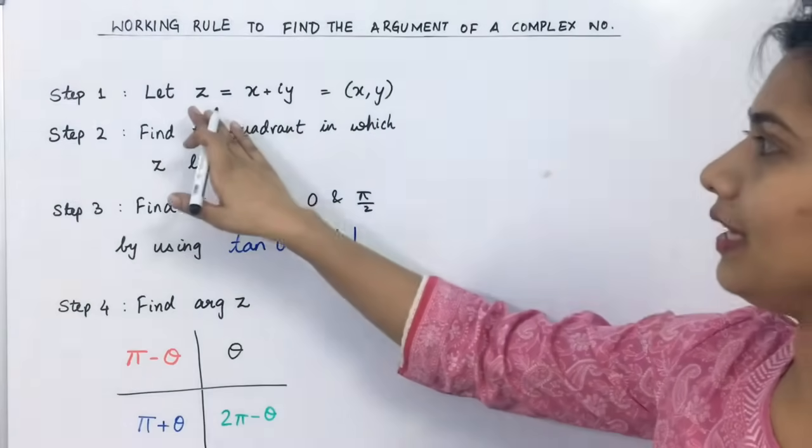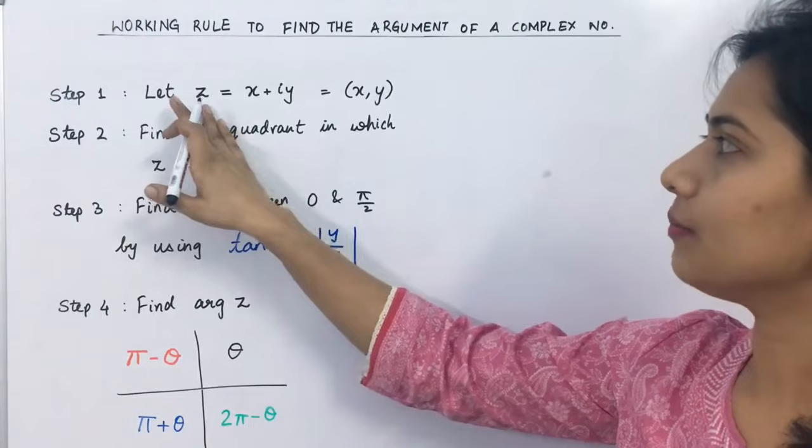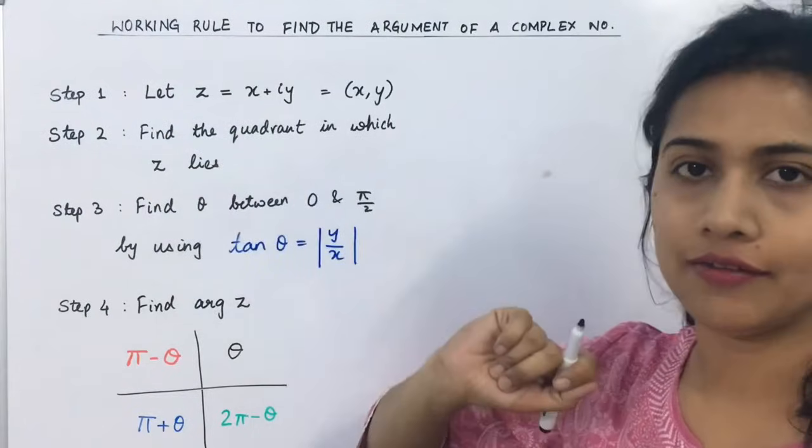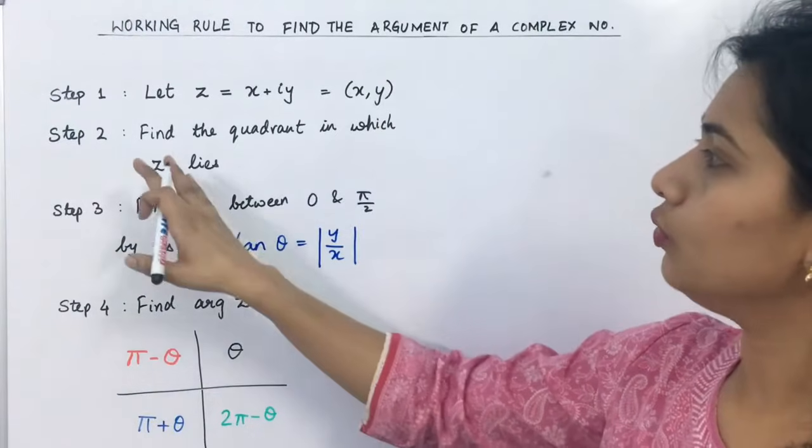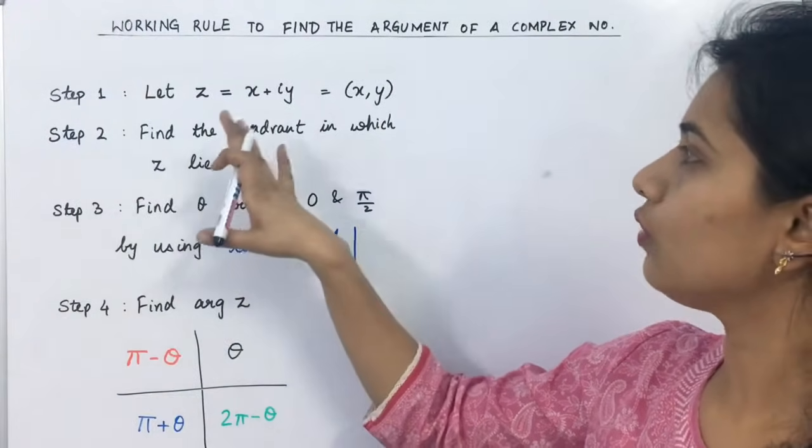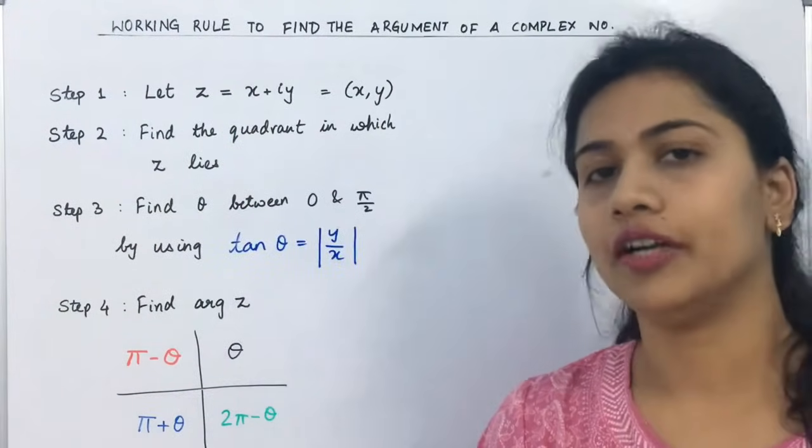The first step is we are going to say that the complex number z is equal to x plus iy. This time we can take the coordinates.